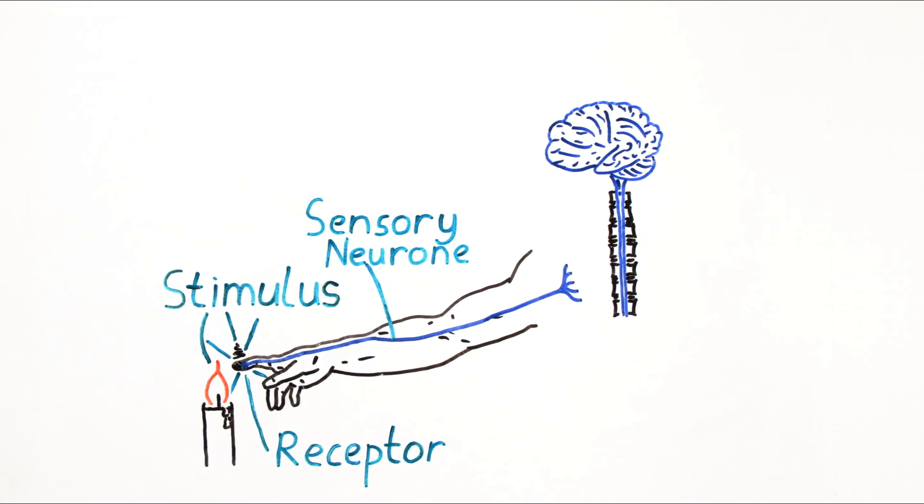When the information passing along the neuron reaches the central nervous system, it needs to pass on that information to another neuron. The point where two neurons join together is called a synapse and the message is passed across the synapse chemically. One neuron releases chemicals that the other one then receives. This does slow down the process a little bit, but it also allows the signal to be split up so the signal can be passed on to more than one neuron if necessary.